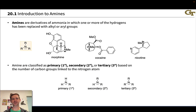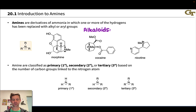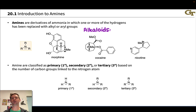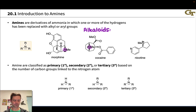Let's start with the basic question: what is an amine? An amine is a derivative of ammonia (NH3) in which one or more of the hydrogens has been replaced with a carbon group, typically alkyl or aryl. Three examples shown are naturally occurring molecules known as alkaloids — named for their alkaline or basic nature due to the nitrogen atom. Morphine, cocaine, and nicotine are examples; nicotine also contains a pyridine nitrogen that can be considered an honorary amine because of its basicity.